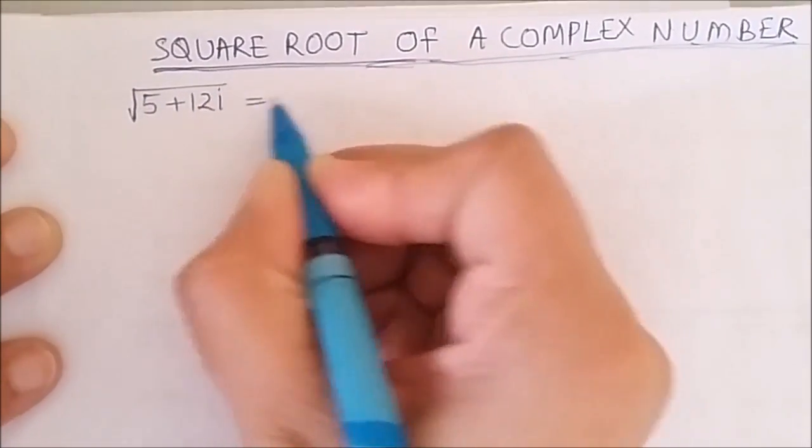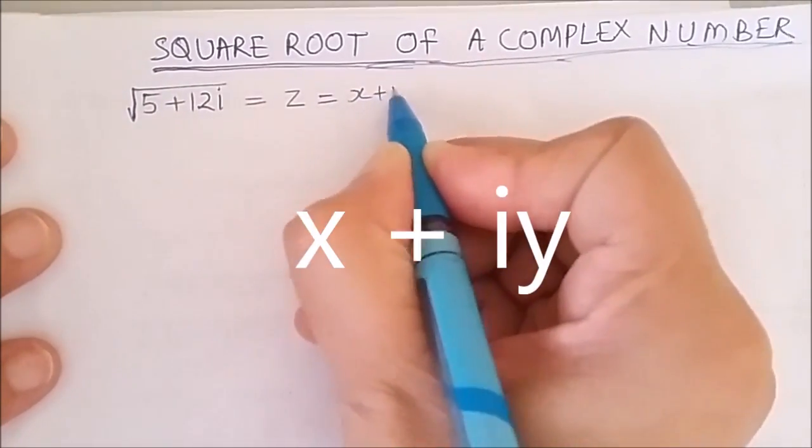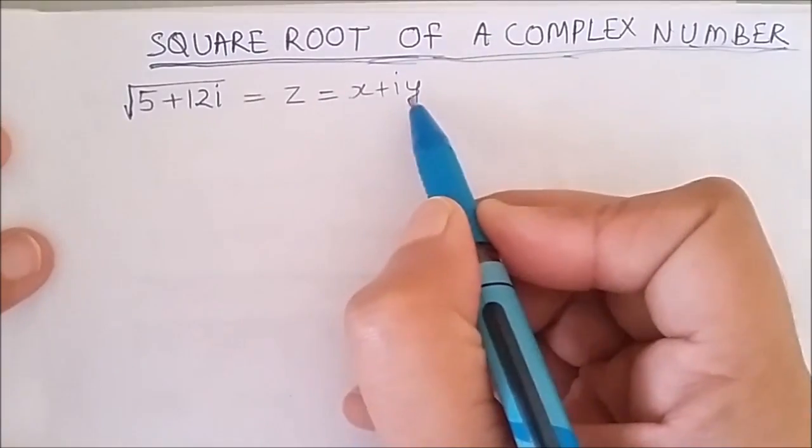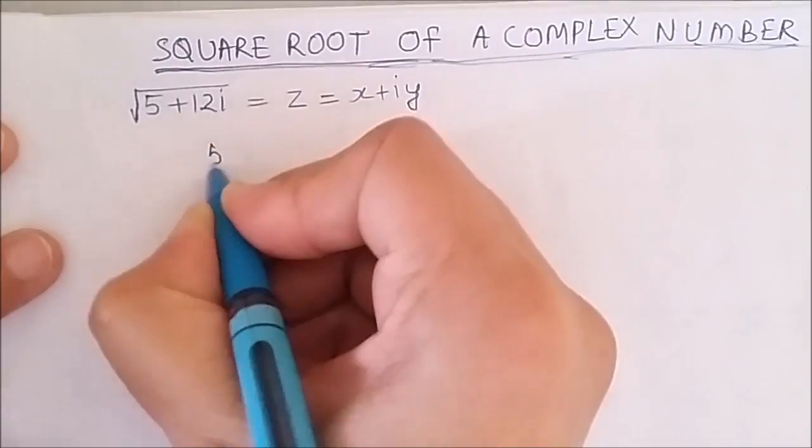Let us say the square root of this number is z, and z is x plus iota y. For complex number z we need x and y, so let us start by squaring both sides. We get 5 plus 12 iota equals...